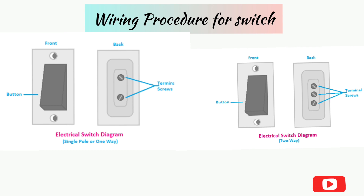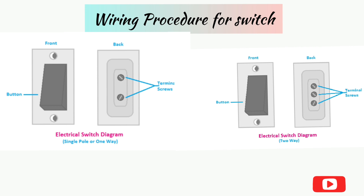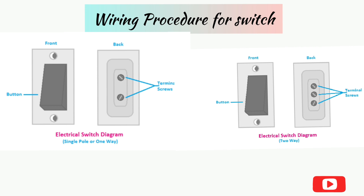Here you can see the terminal diagram of the one-way switch, or SPST switch. It has two terminals for its connection. One position is off and another position is on. So when you operate the switch, it will stop or start the flow of current through it.